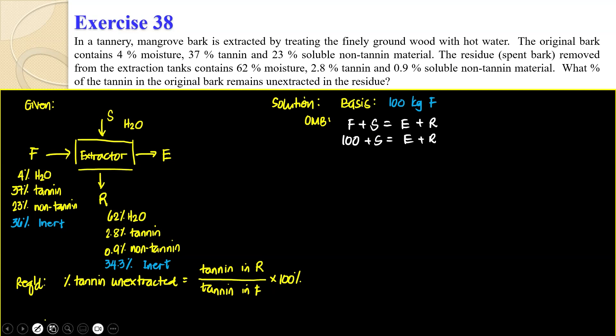So from here, I can say you can do what you call an inert balance. For my inert balance, I can say inert in F, so that's 0.36F is equal to the inert in R, 0.343 residue. But then F, that's 100, so that's already 36, is 0.343R. 36 divided by 0.343. Did you get 104.96? So R is 104.956 kilograms.